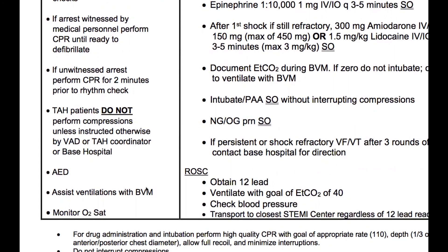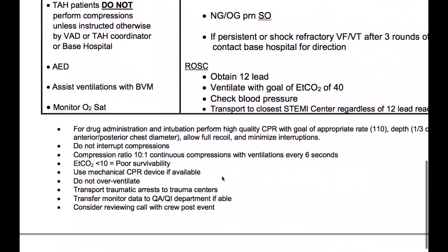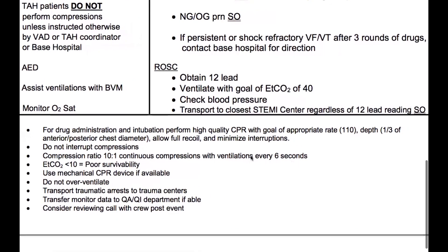BLS roles include use of an automated external defibrillator, assisting with ventilations with a bag valve mask, and monitoring O2 saturations. A lot of the rest is for ALS, such as drug administration and intubation. But the goal is high-quality CPR with a rate of 110, a depth of one-third the anterior-posterior chest diameter, allowing for full recoil and minimizing interruptions.